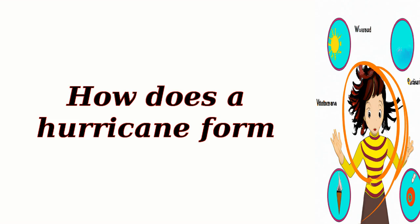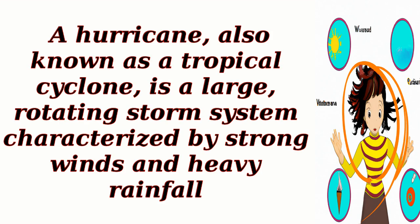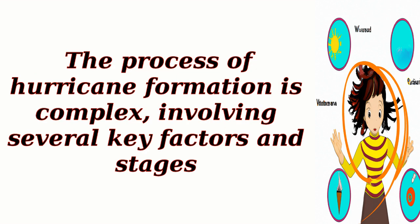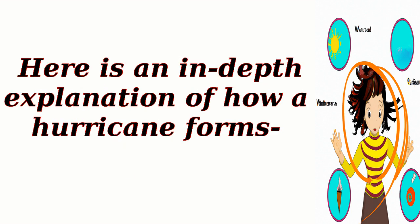How does a hurricane form? A hurricane, also known as a tropical cyclone, is a large, rotating storm system characterized by strong winds and heavy rainfall. It typically forms over warm ocean waters near the equator. The process of hurricane formation is complex, involving several key factors and stages.